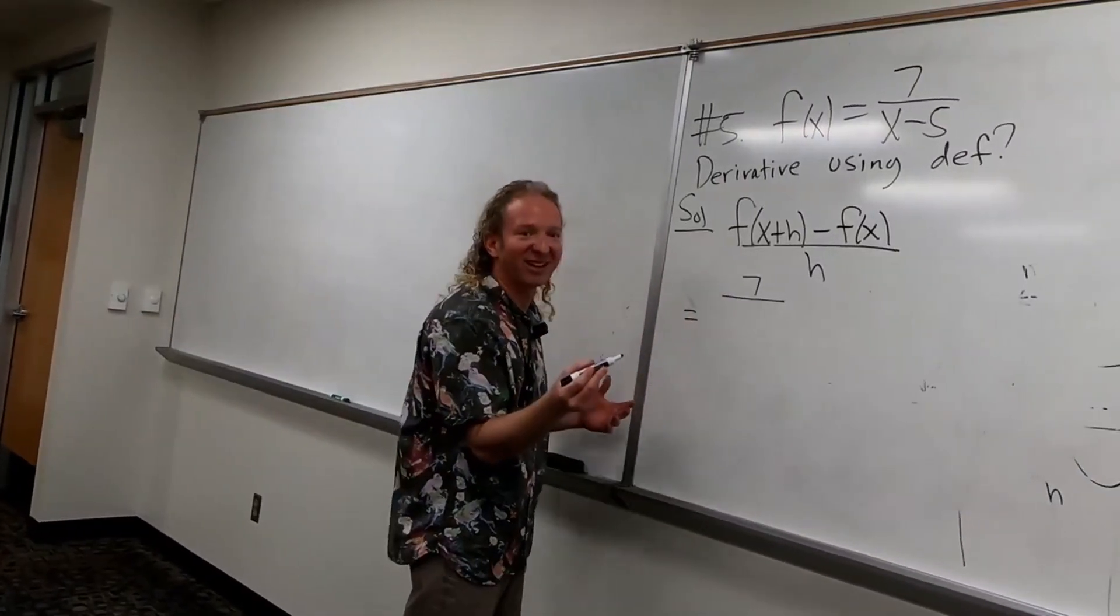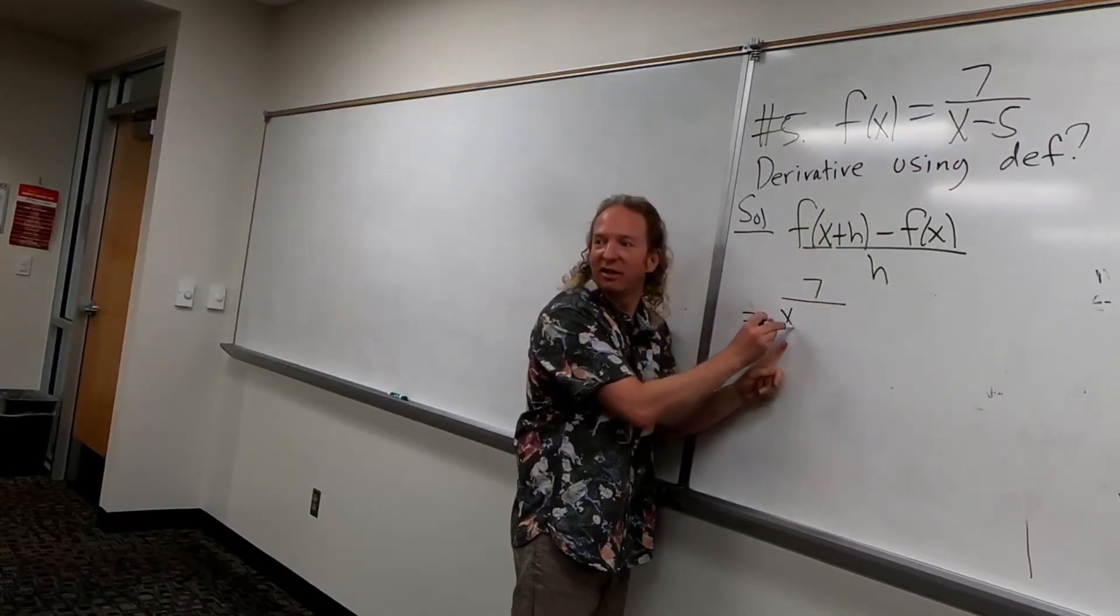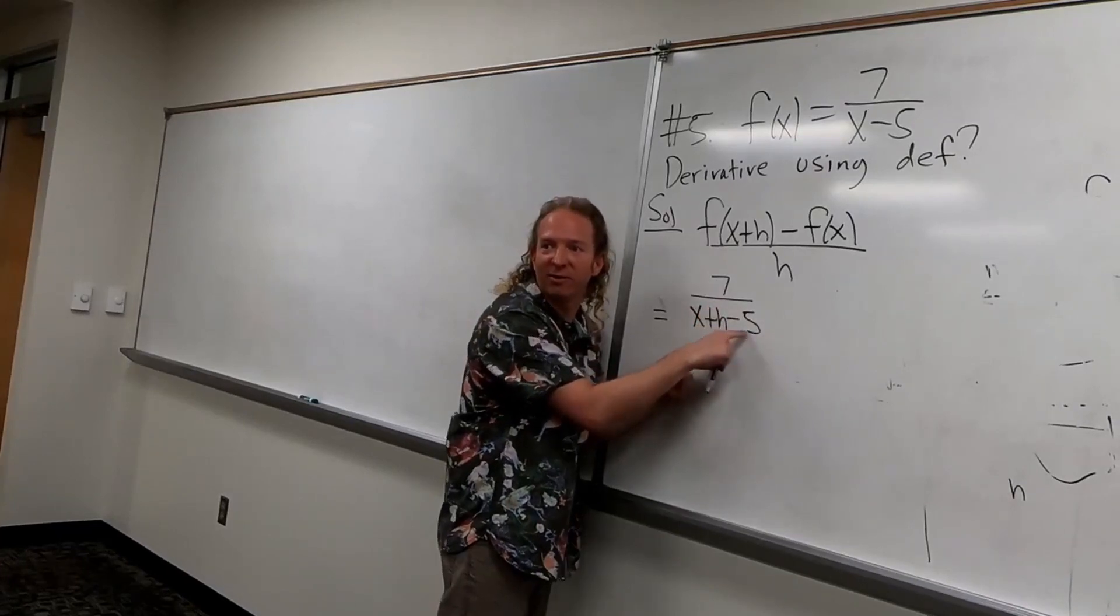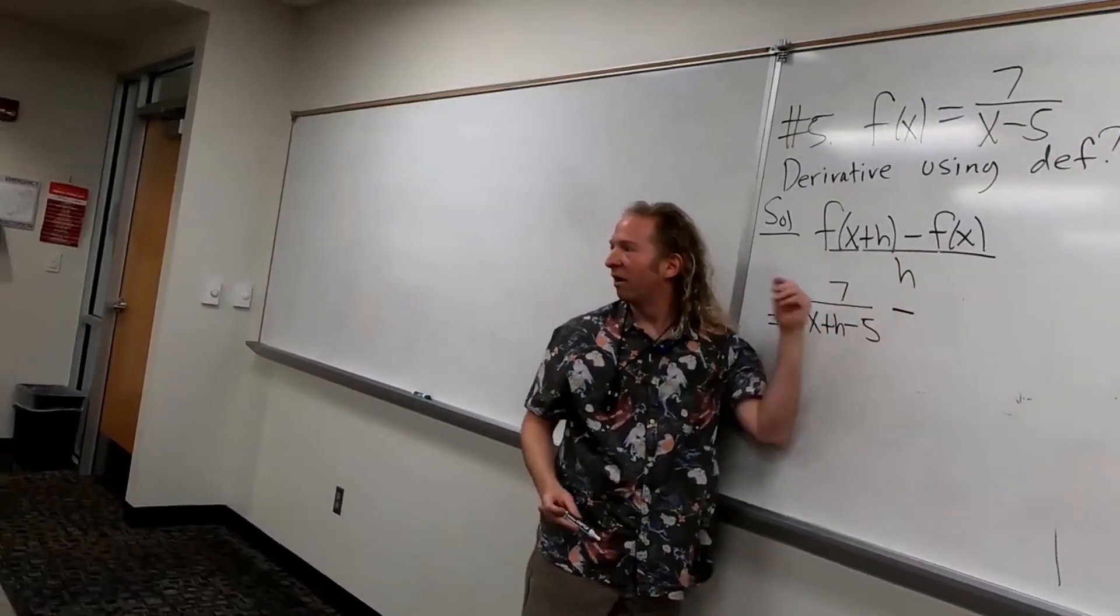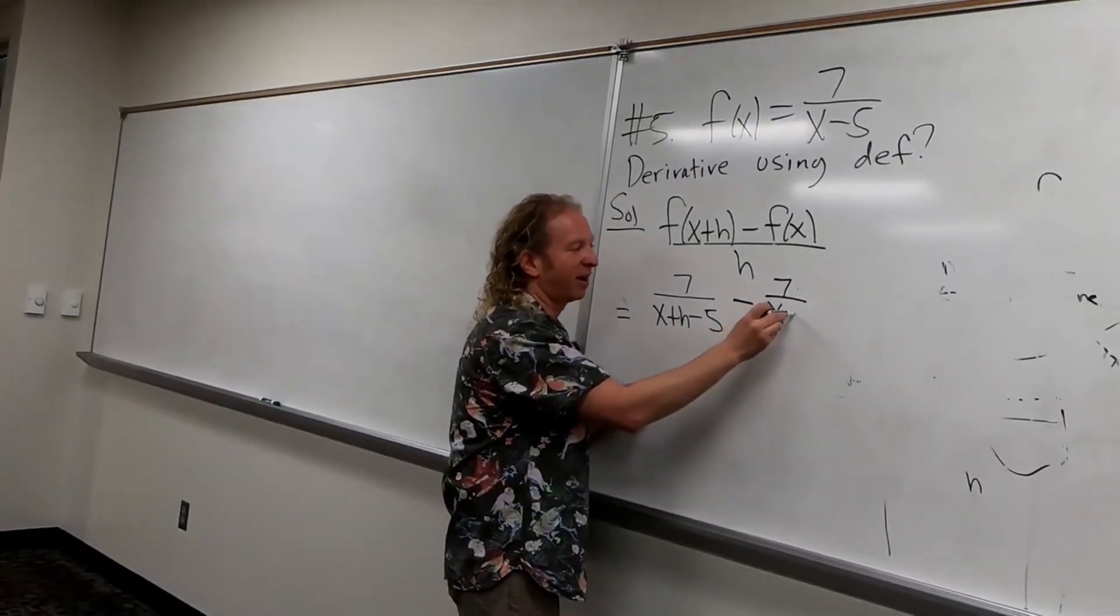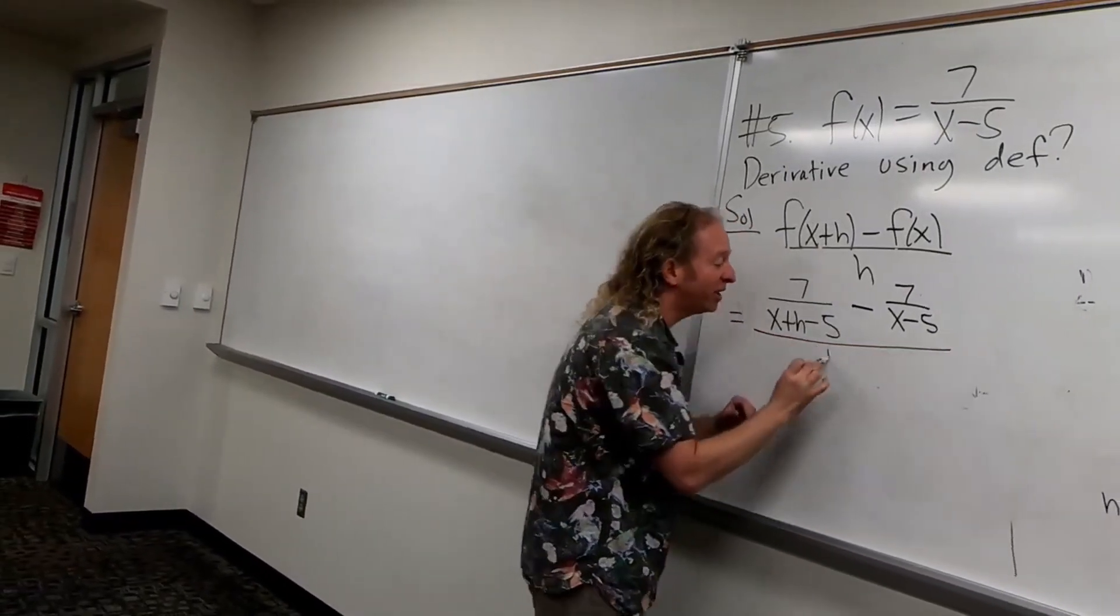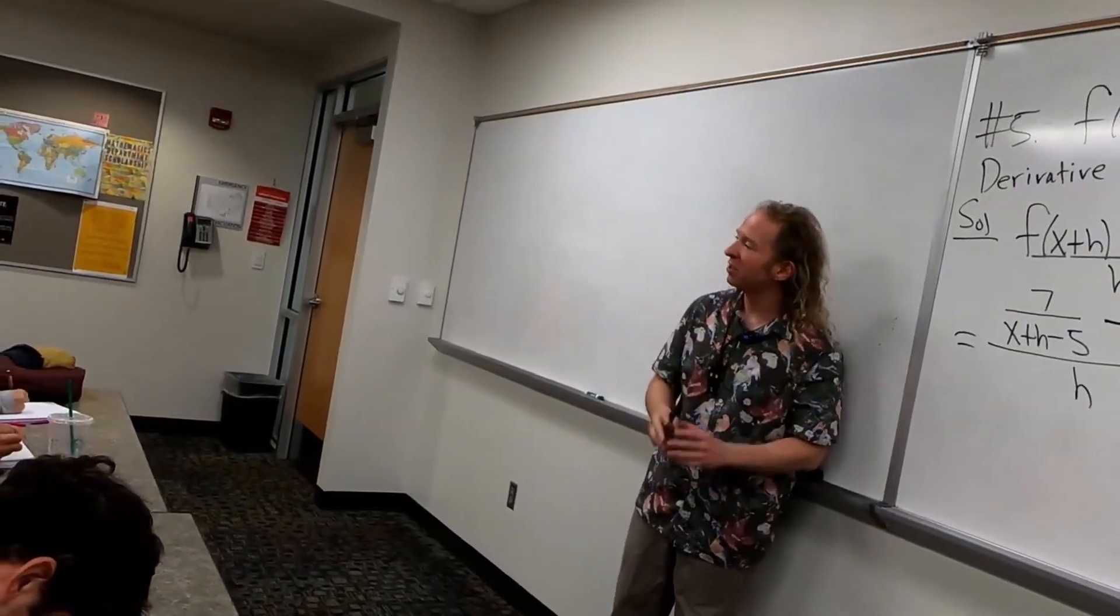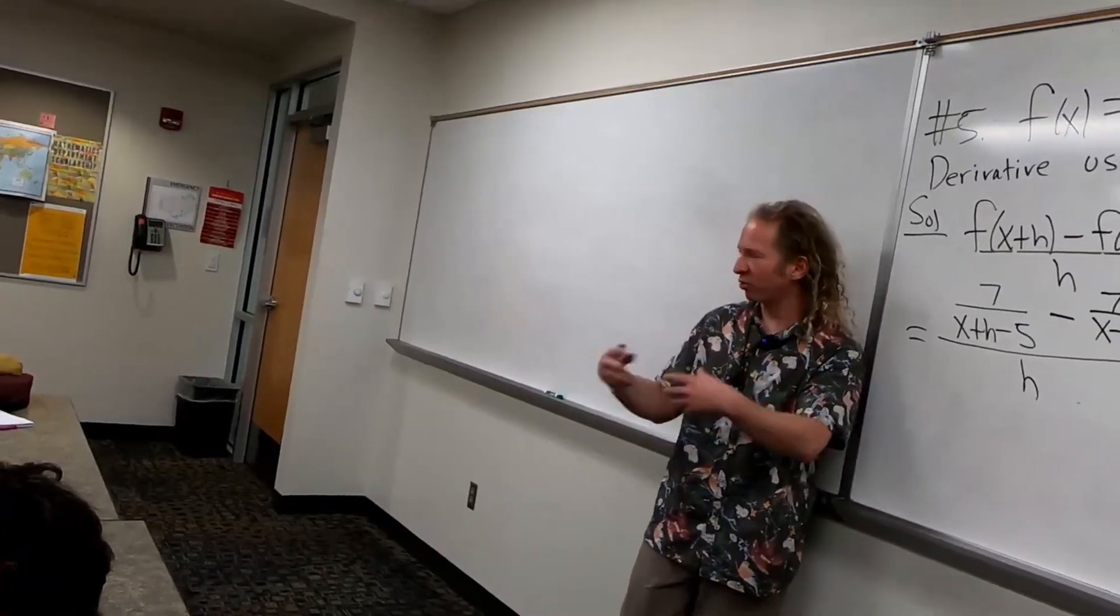So, instead of x, it would be x plus h minus five. Everyone see where the five came from? It's from there. Then minus, and then it would just be f(x) now, so it'd be seven over x minus five. Is that it? What's missing? Over h. Over h. Yeah, please don't forget. It's very important that you structure your work and you're careful. You'll have the whole time on the test. You'll have two hours and 20 minutes.